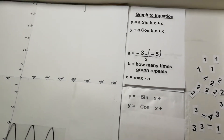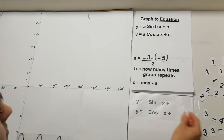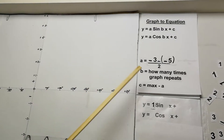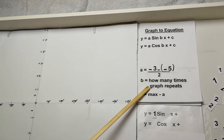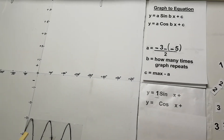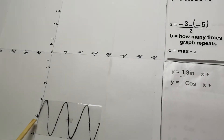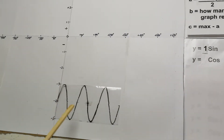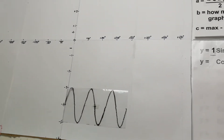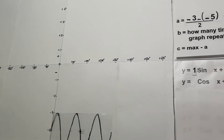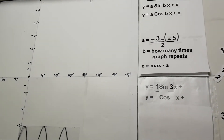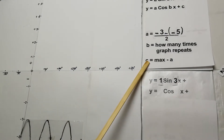For b — how many times the graph repeats or touches the bottom — you can see it goes around once, twice, three times and touches the bottom three times. So the b value is 3.